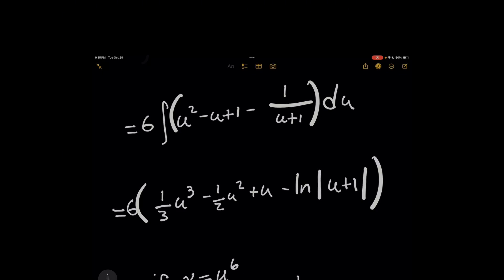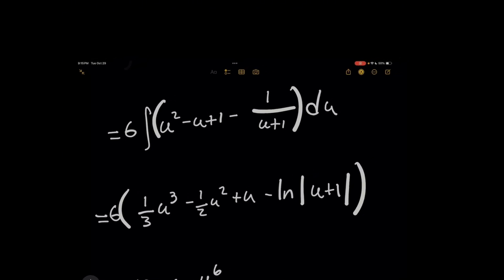But by inspection, you can save time because if you look at taking the derivative of u plus 1 on the bottom, you just get a coefficient of 1. So you can just quickly just say it's natural log of the absolute value of u plus 1.